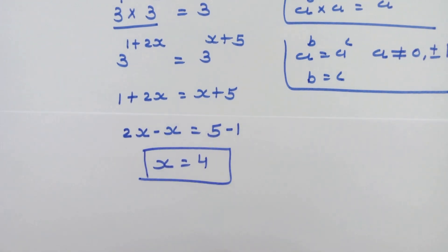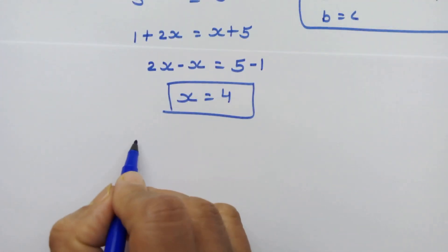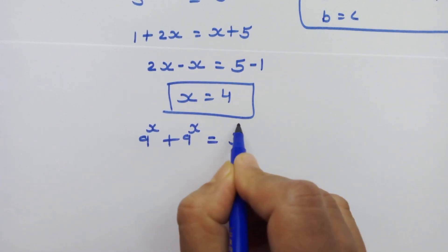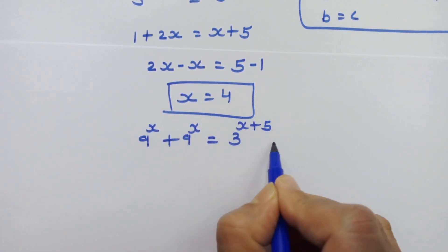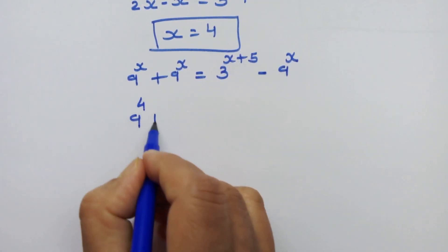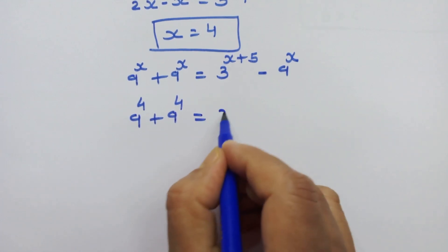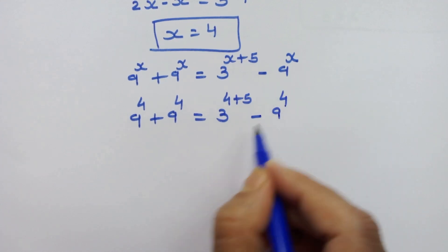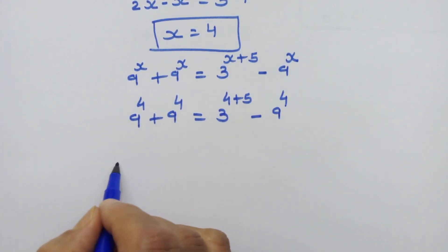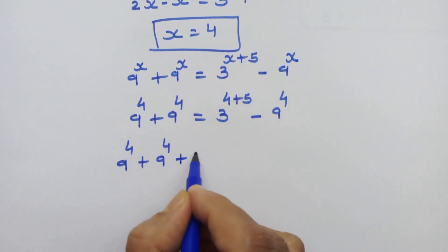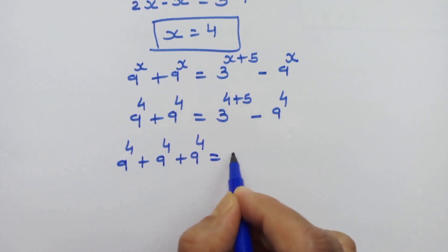Now we have the value of x. Let's put this value in our main equation: 9 raised to x plus 9 raised to x is equal to 3 raised to x plus 5 minus 9 raised to x. So 9 raised to 4 plus 9 raised to 4 is equal to 3 raised to 4 plus 5 minus 9 raised to 4. Moving 9 raised to 4 to the left side, we have 9 raised to 4 plus 9 raised to 4 plus 9 raised to 4 is equal to 3 raised to 9.